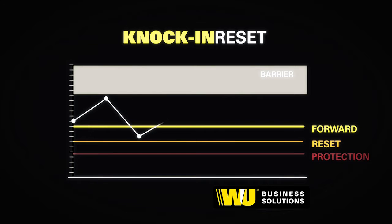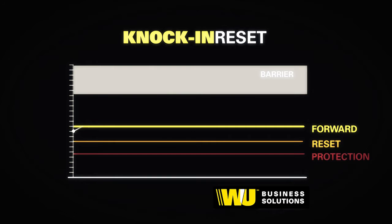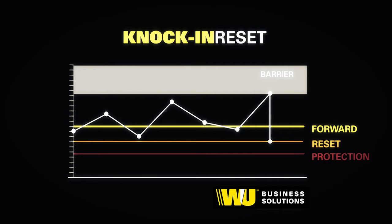If the market finishes above the protection rate and hasn't touched the knock-in rate, you can take advantage of that move and deal at the prevailing market spot rate. Finally, if the market touches the knock-in level at any point during the life of the option, the client will be obligated to deal at the reset rate, which is usually set close to the forward rate at inception.